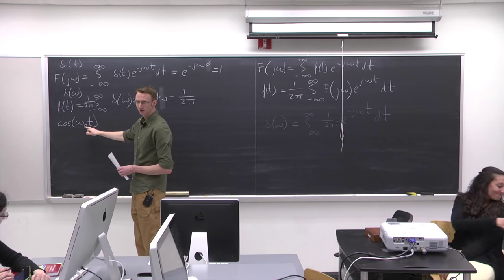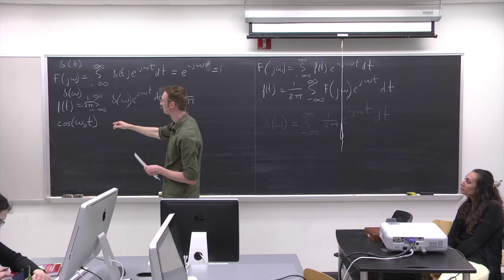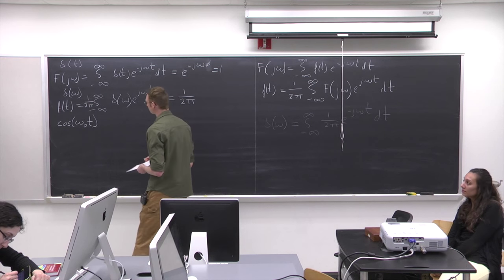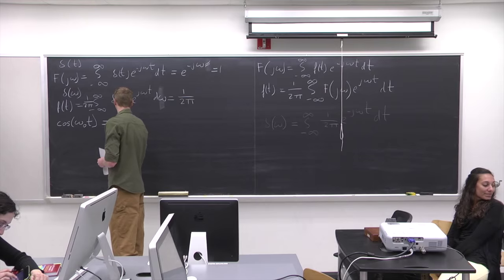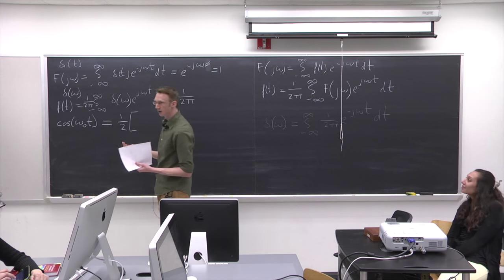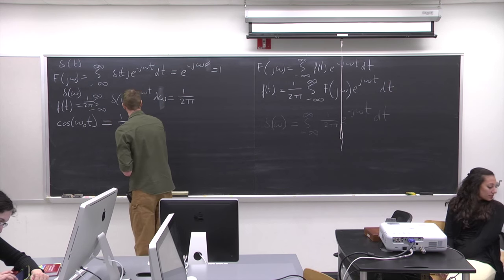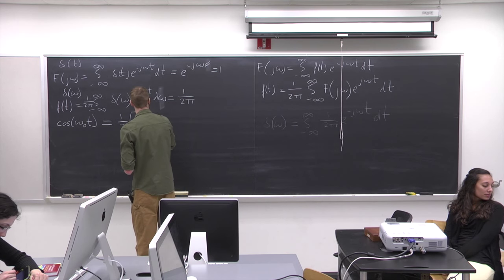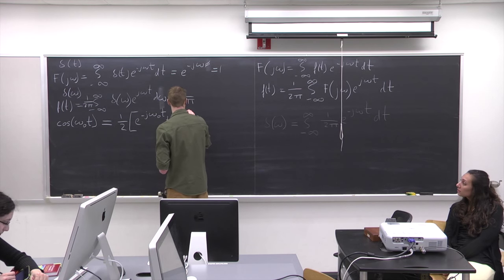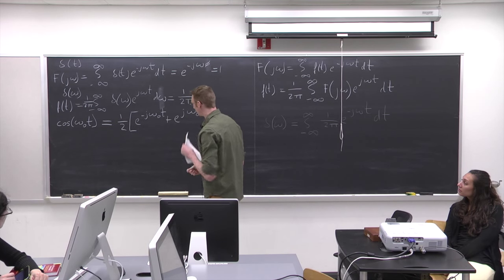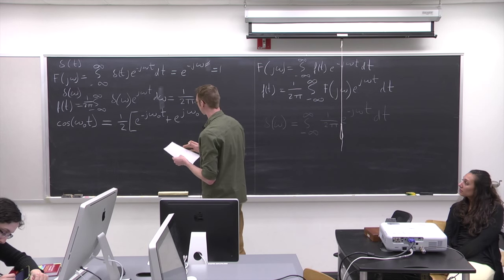The last example is a cosine. ω₀ here is the one frequency that the cosine has — this is a time domain function. Before we transform it, we'll rewrite it using the Euler relation, which relates cosines and sines to complex exponentials. The cosine particularly becomes the sum of two exponentials. If you're unsure how this comes from Euler's relation, you can look it up in the book.